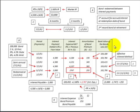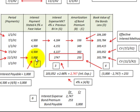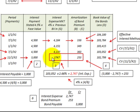Let's make our calculations using this amortization schedule with the effective interest rate method. Our carrying value on 7.1X2 is $103,052. At the redemption date on 11.1X2, interest payable to bondholders is $3,000. Interest expense is calculated as the beginning carrying value of $103,052 times 2.66%, giving us $2,747.